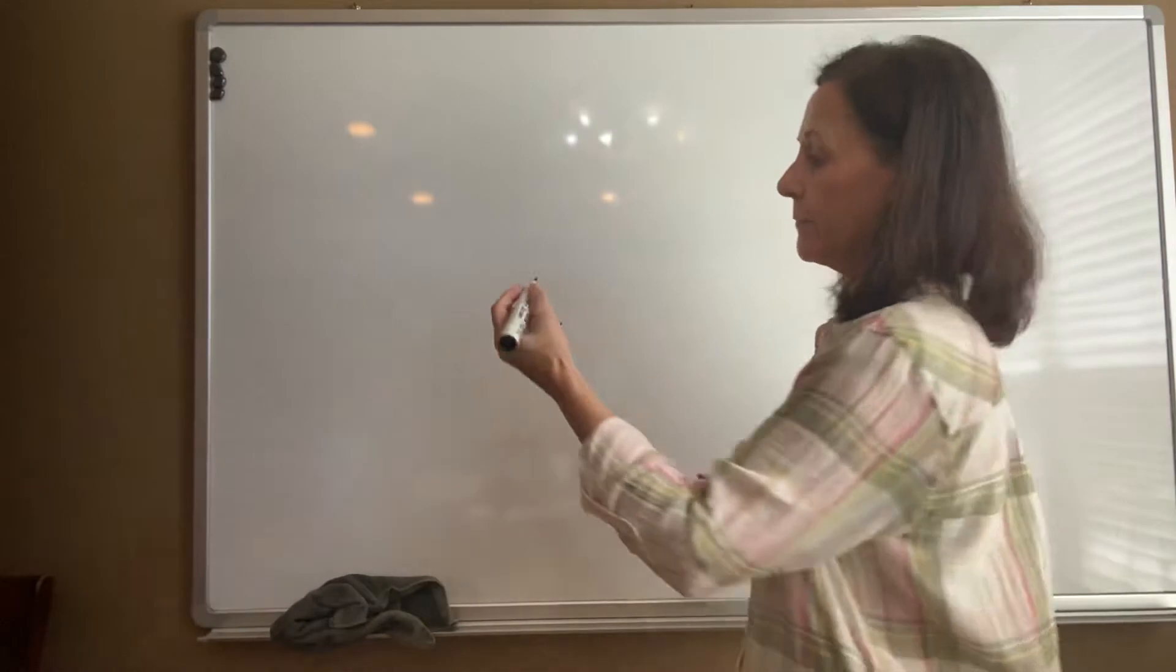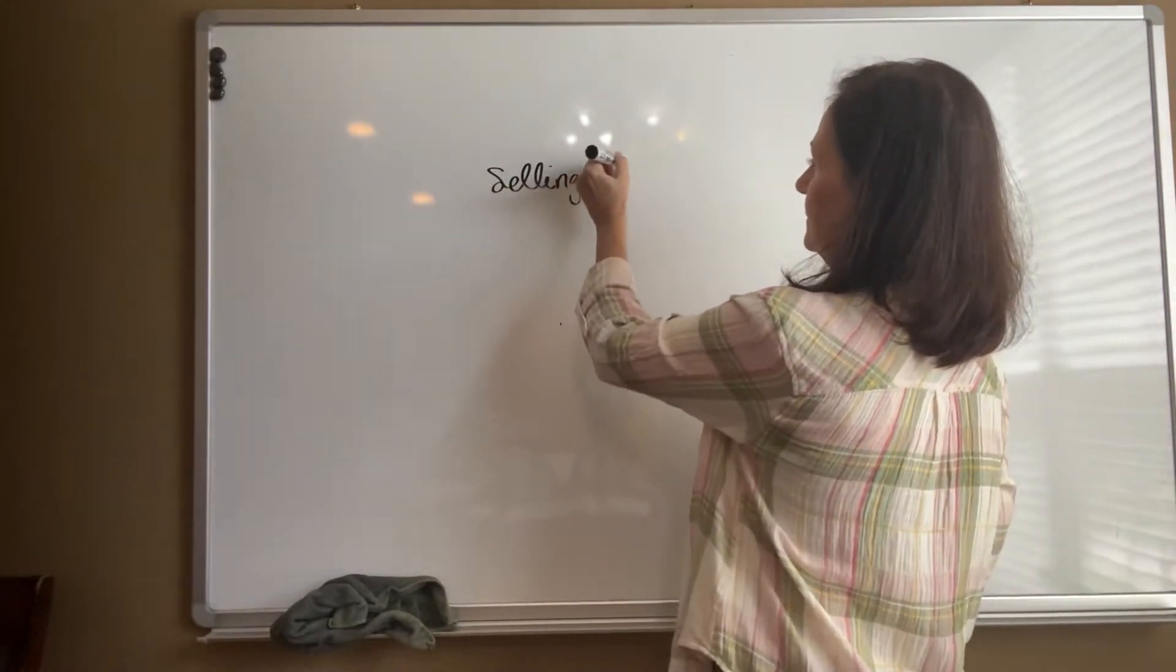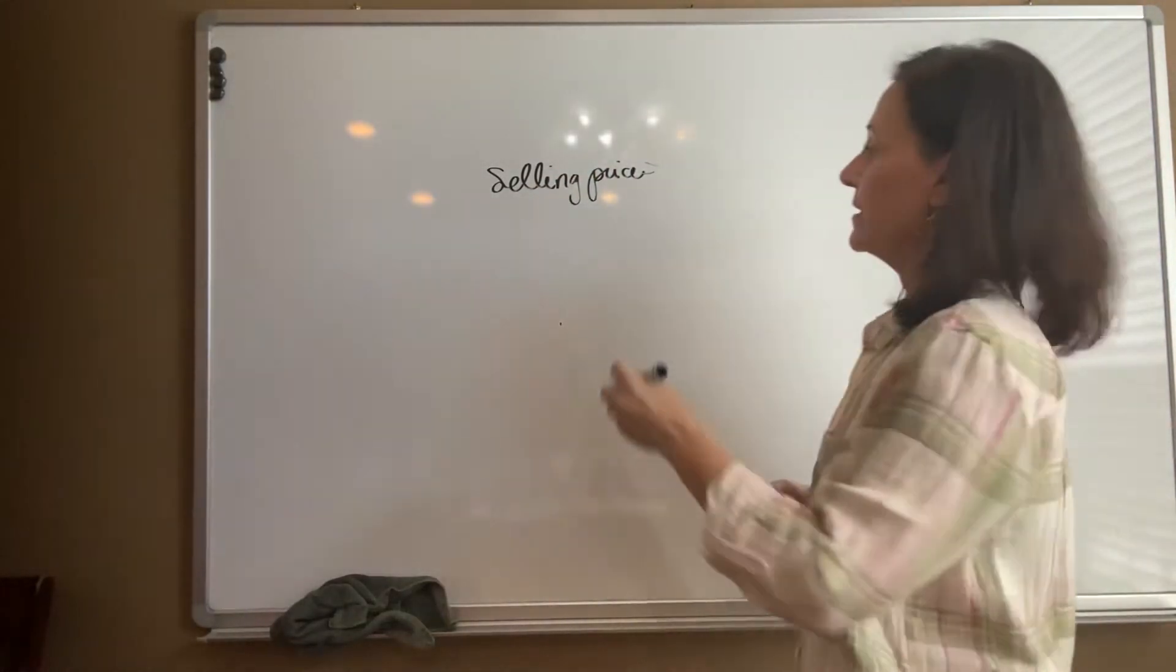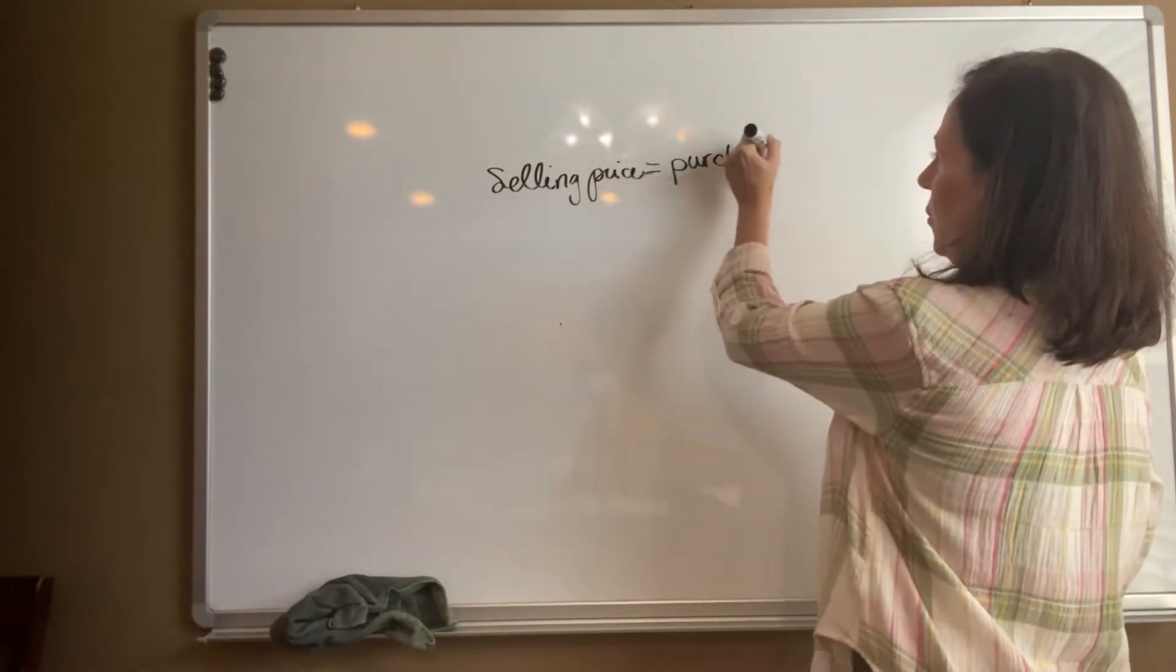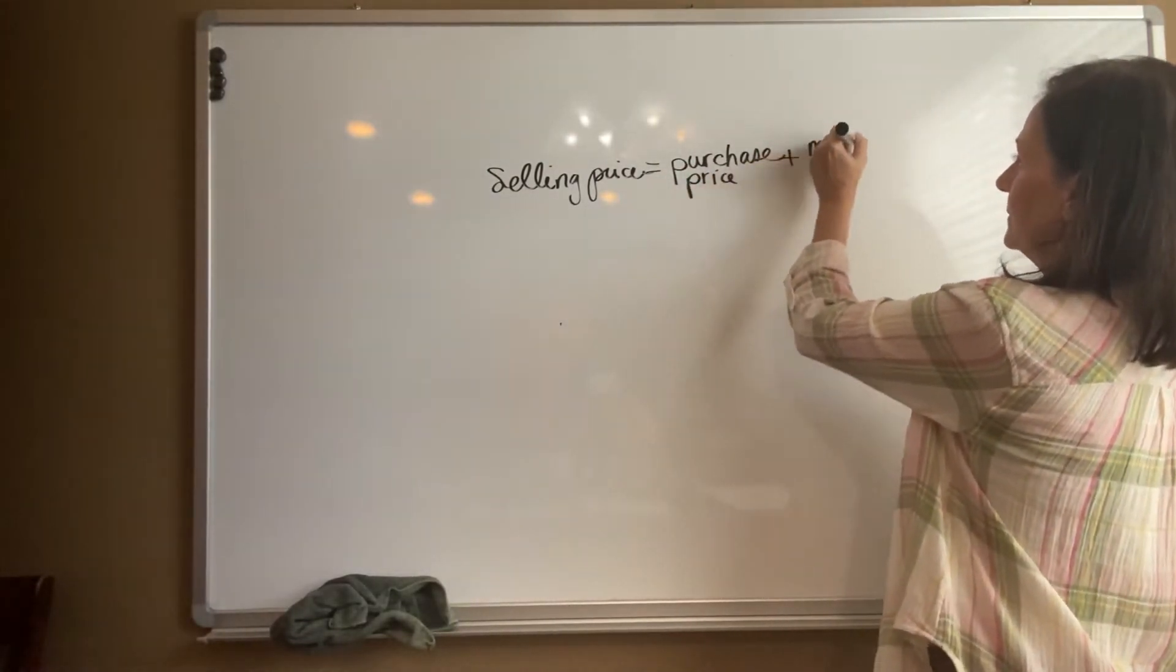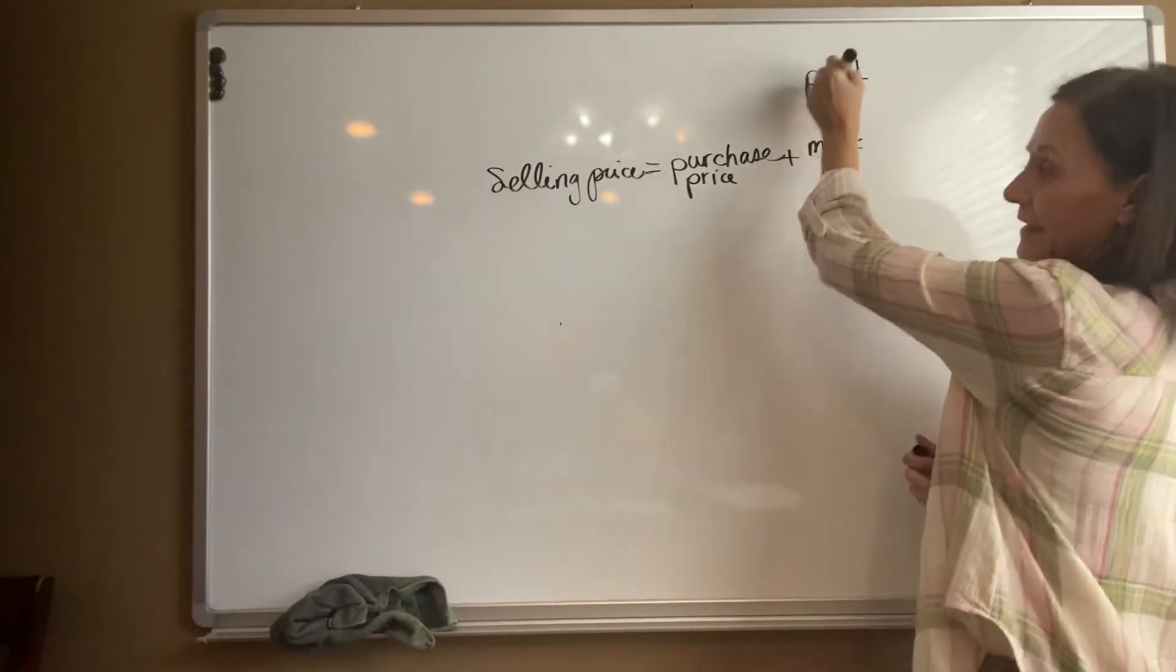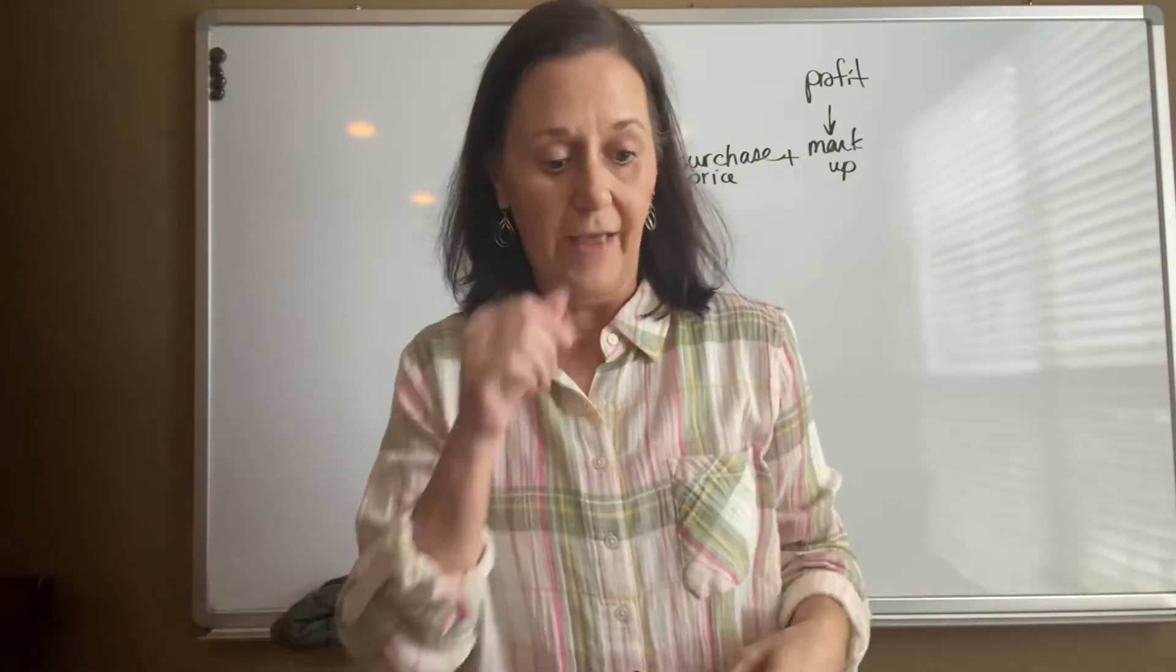So we're going to have this formula. We're going to have the selling price, what they're selling it to you for, is going to equal the purchase price, what the retailer paid for it, plus some markup. This is their profit. That is what they are making on the sale of that product.